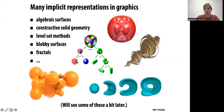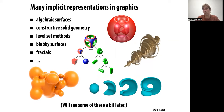There are many implicit representations: algebraic surfaces, constructive solid geometry, level sets, blobs, fractals, and so on. We will see some of these. But first, let's play a game to understand what is good about implicit surfaces and what is not so good. I'm thinking of an implicit surface defined by f(x, y, z) = 0. I ask you: give me a point on the surface. You can use f to evaluate in any way you want.